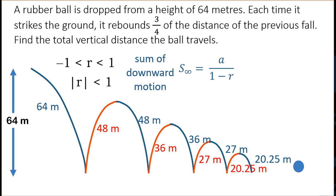The sum of the infinite series is equal to A over 1 minus R, where A is 64 and R is three-quarters. And that works out to 256 metres worth of downward motion in total.